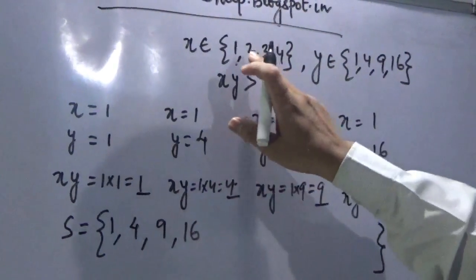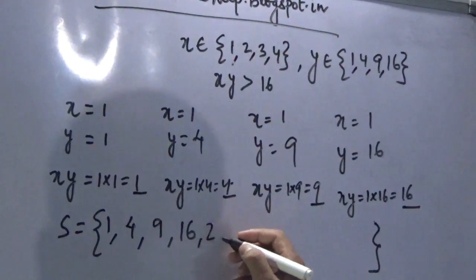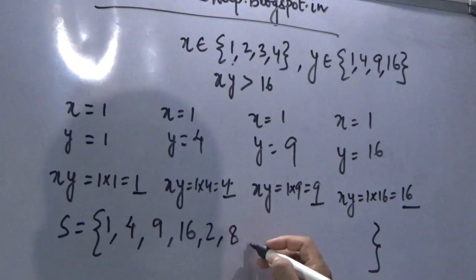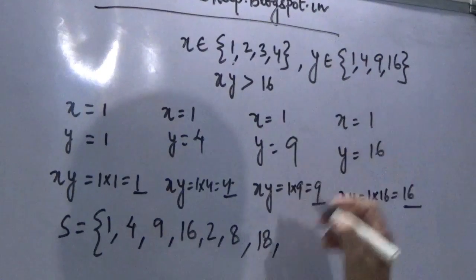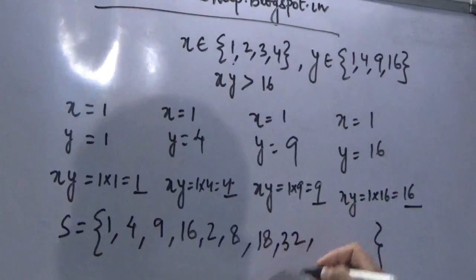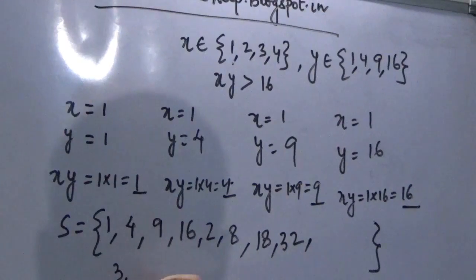Similarly when x equals 2 is multiplied with all, we get 2, 8, 18, and 32. When x equals 3 is multiplied we get 3, 12, 27, and 48.